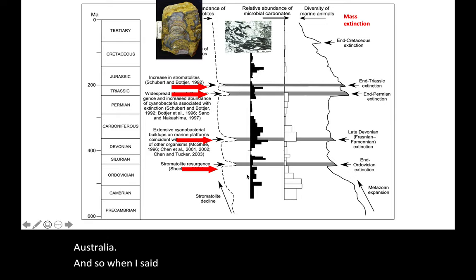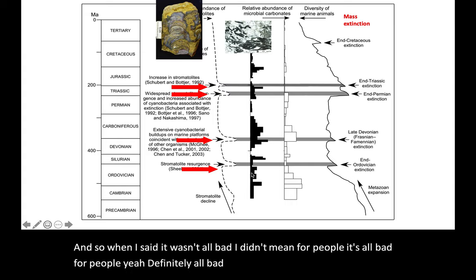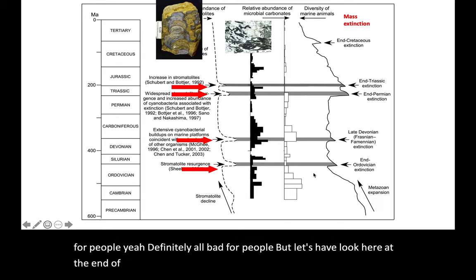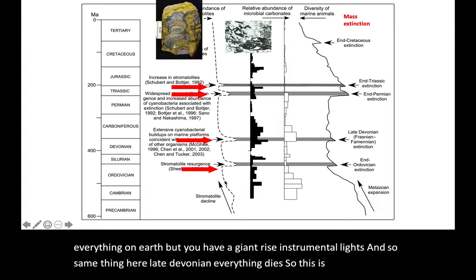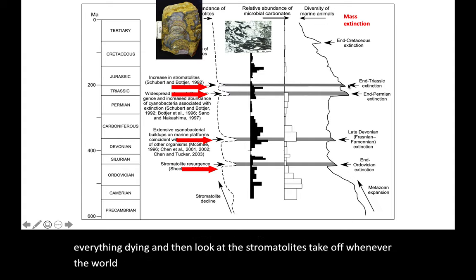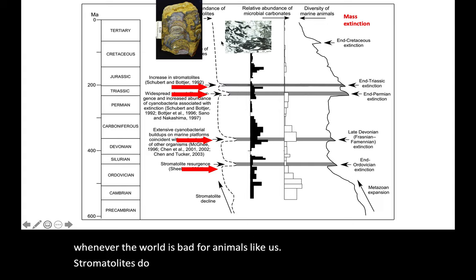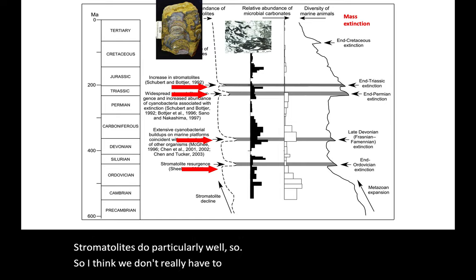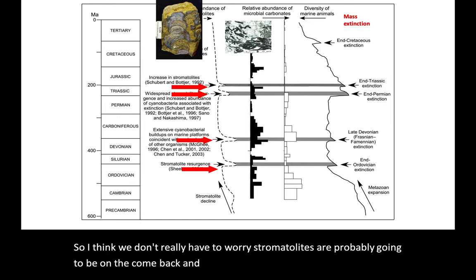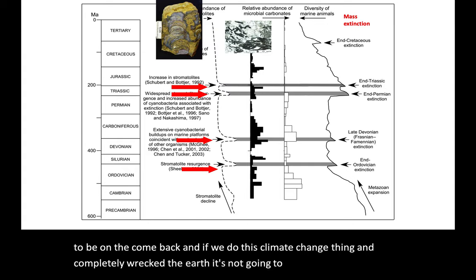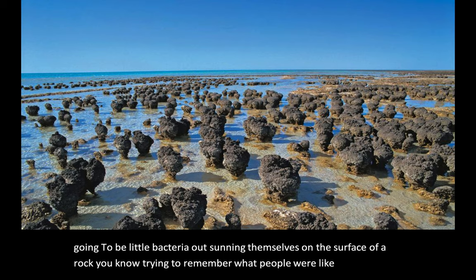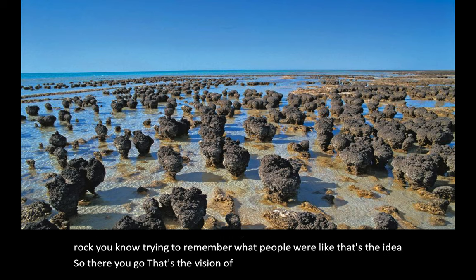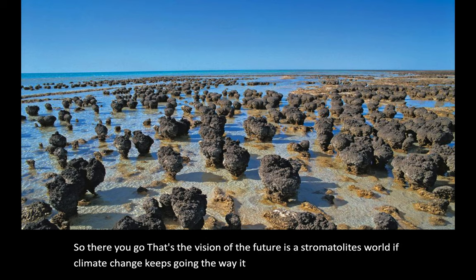This is in Shark Bay in Western Australia. When I said it wasn't all bad, I didn't mean for people — it's all bad for people. At the end of the Ordovician, you've got an extinction of pretty much everything on Earth, but a giant rise in stromatolites. Same thing in the late Devonian — everything dies, and then look at the stromatolites take off. Whenever the world is bad for animals like us, stromatolites do particularly well. Stromatolites are probably going to be on the comeback. If we do this climate change thing and completely wreck the Earth, it's not going to be uninhabited — there'll be little bacteria out sunning themselves on the surface of a rock. It's a stromatolite world if climate change keeps going the way it is, which it seems to be going very much that way.